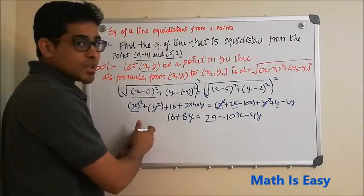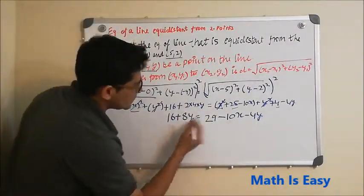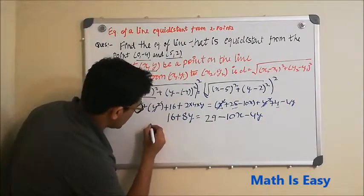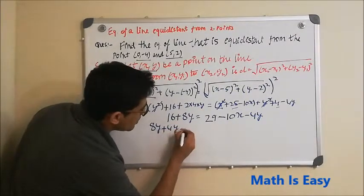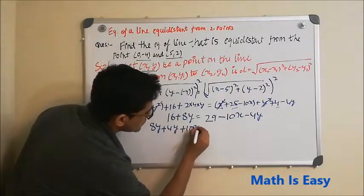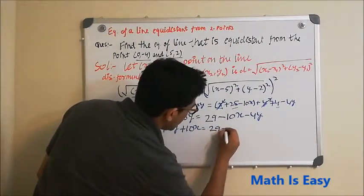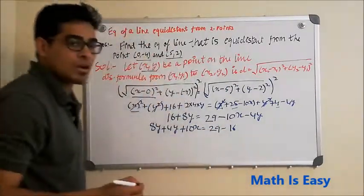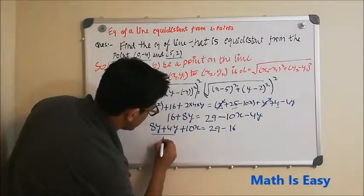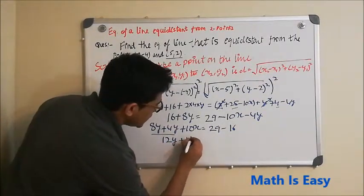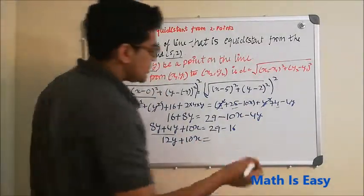We will bring everything to this side - our x and y will be on this side and all the constants will go on this side. When we switch, what we have on the left-hand side is 8y + 4y + 10x, and what is on this side is 29 - 16. We add this, so what we get is 12y + 10x equals 13.